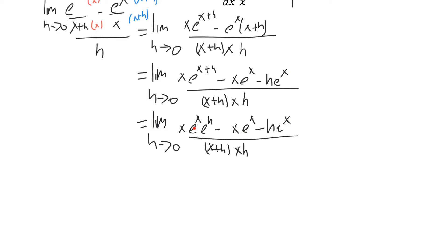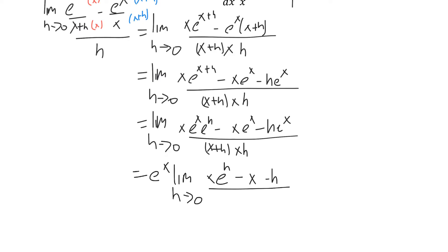Notice we've got e to the x in common with all three terms, so we can factor that out — all the way out of the limit, because of course it is a constant; there's no h with it. So we have e to the x times the limit of x e to the h minus x minus h, over x plus h times x times h.